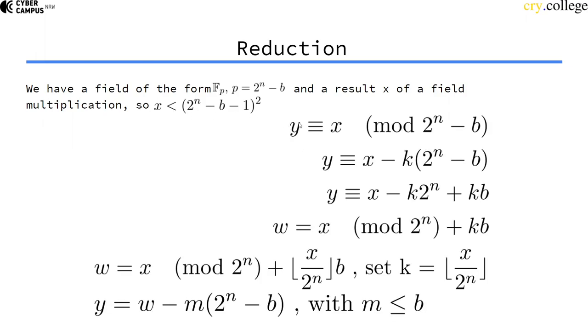So now I have a number that is large, two times as large as the modulus, because it's the result of a multiplication. And I want to get the equivalent number that is smaller than the modulus. So I want to take it mod the modulus.